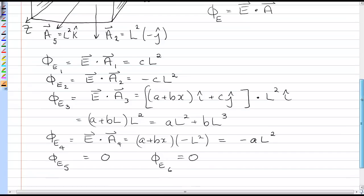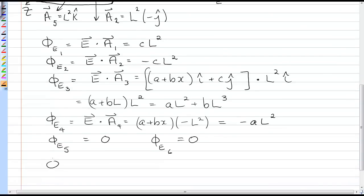All right, so now to sum all fluxes, the net flux, it's just the sum, and remember these are all scalar values, so I'm going to have cL squared minus cL squared plus aL squared plus bL cubed minus aL squared, which is just equal to bL cubed. And that's the final answer for the electric flux through that cube.